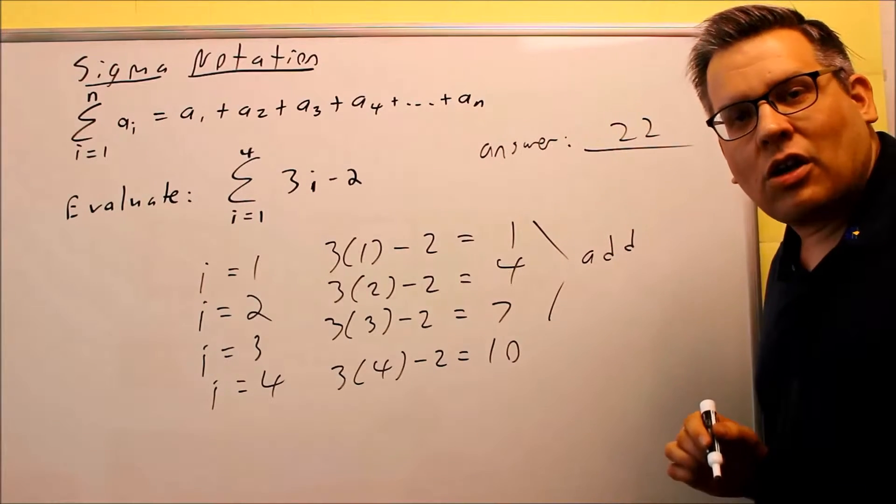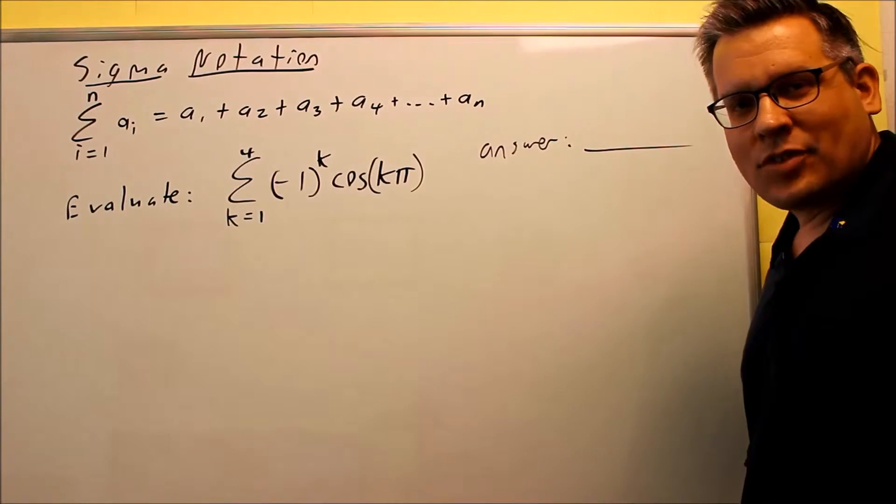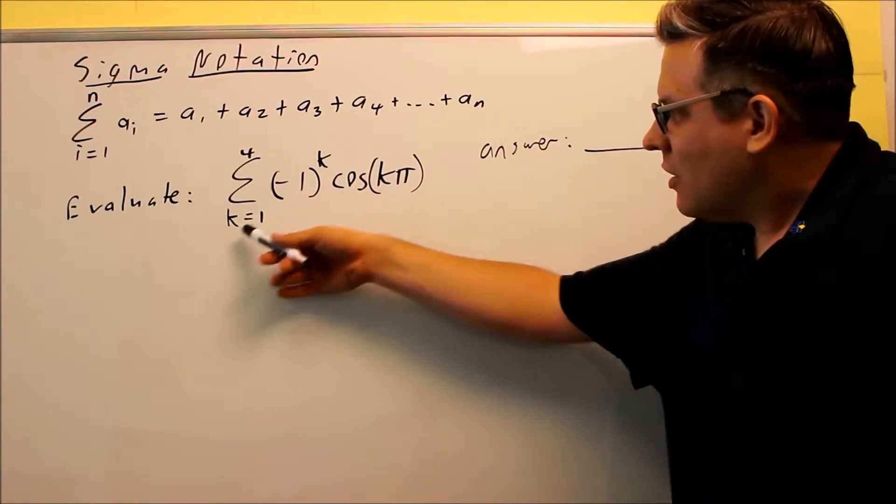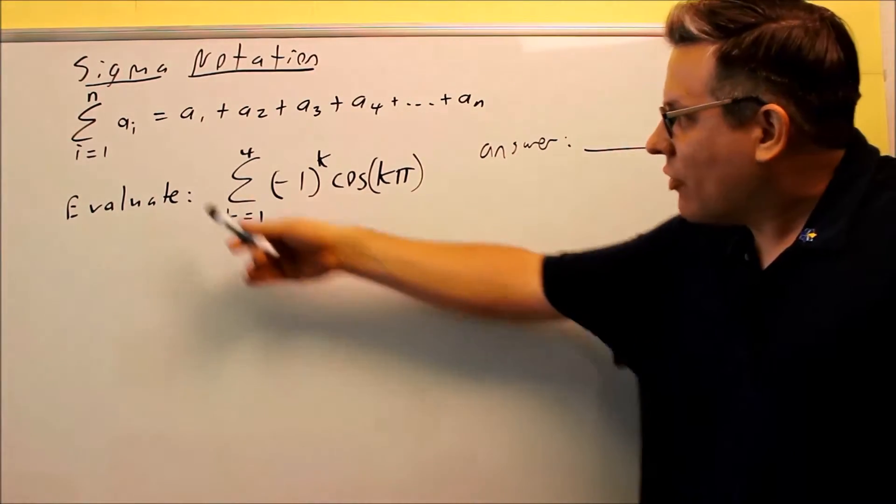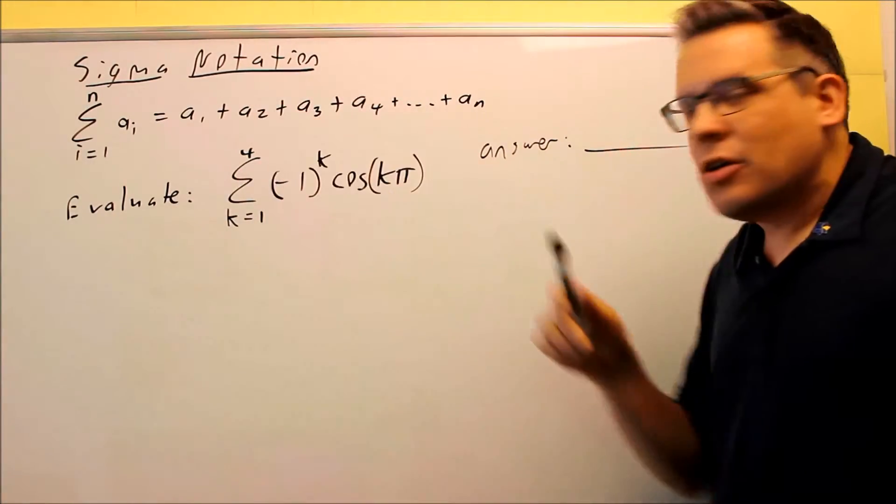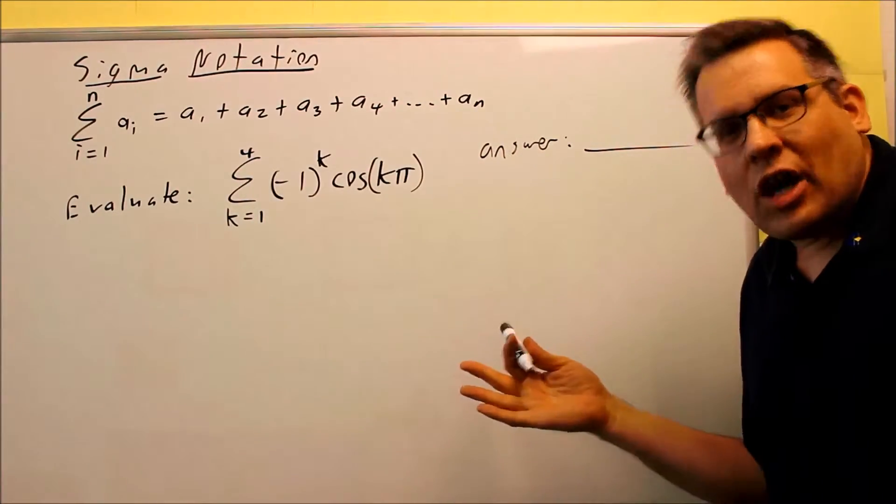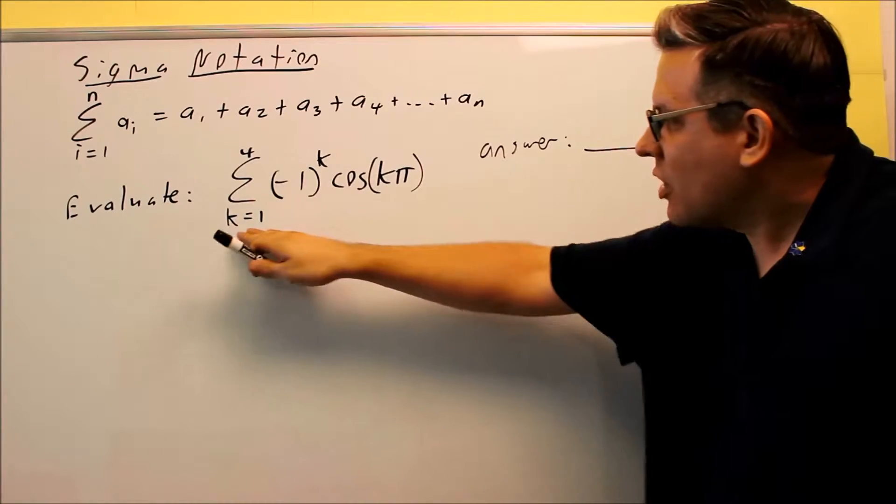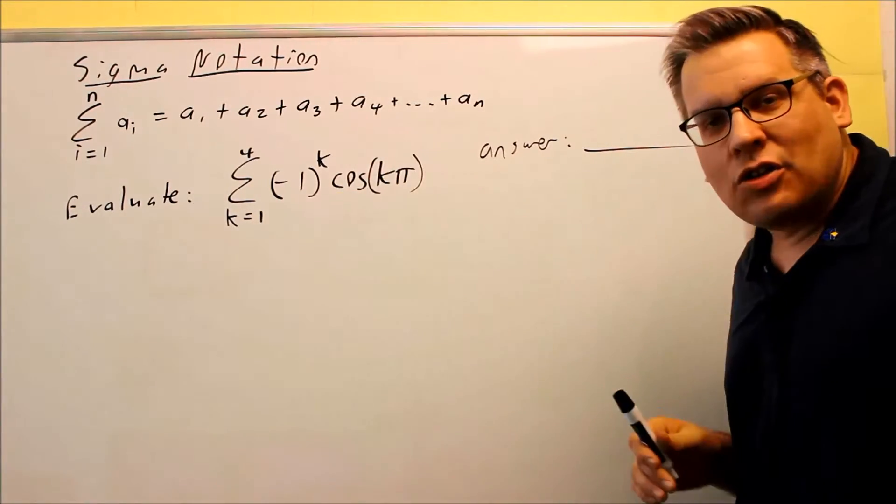So now let's take a look at another example involving trig. Okay, for the next one, we have a k down here instead of an i. So again, these could be used interchangeably. Some books have i, some have k. It doesn't really matter. It just tells you what variable you're using in the expression itself.